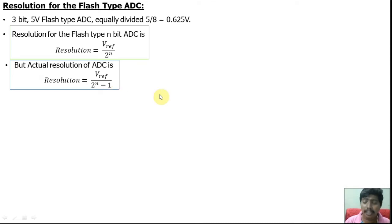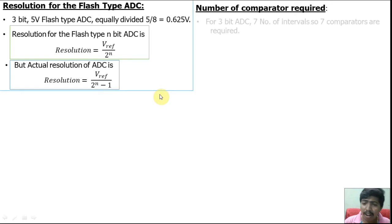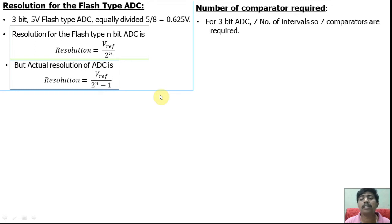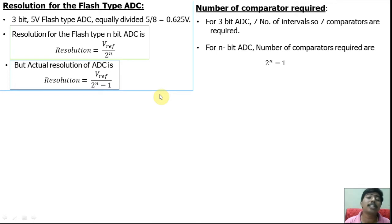How to calculate the number of comparators required for designing a flash type ADC: for the 3-bit flash type ADC we discussed, there are 7 intervals, so 7 comparators are required. For an N-bit ADC, the number of comparators required is 2^N − 1. This is the formula for the number of comparators required.